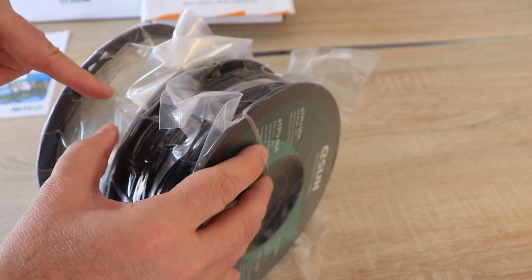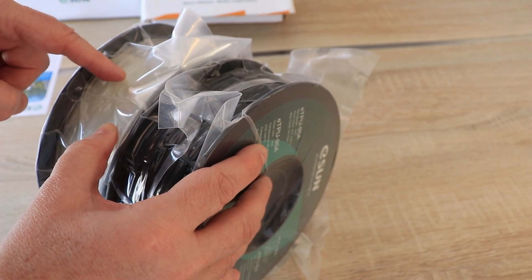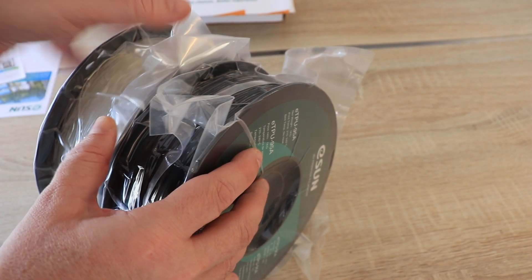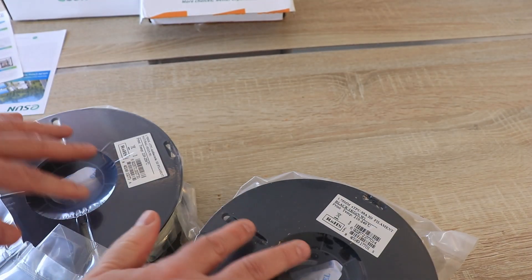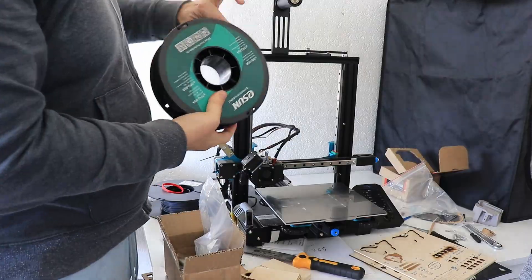As you can see the antibacterial is in this natural transparent color and the regular TPU in black. The printing I will start with regular TPU.